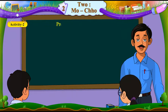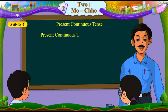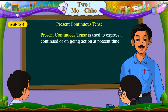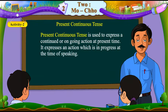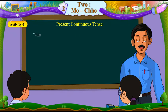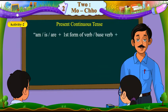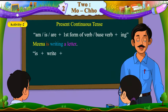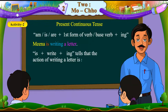Now, let's understand present continuous tense. Present continuous tense is used to express a continued or ongoing action at present time. It expresses an action which is in progress at the time of speaking. The hint is am, is, or are, plus first form of verb or base verb, plus ing. For example, Meena is writing a letter — is plus write plus ing — tells that the action of writing a letter is still in progress.